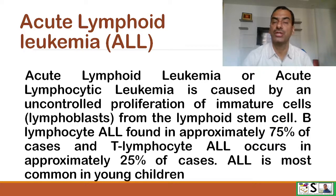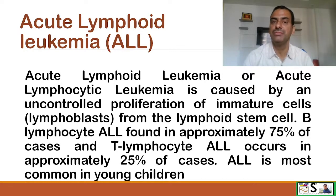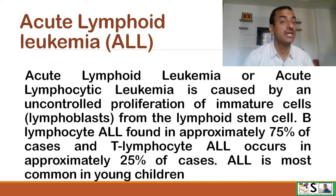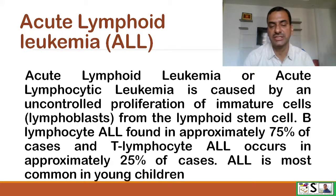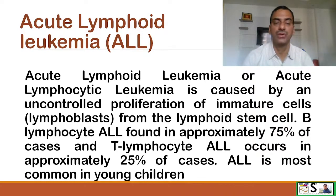Acute lymphoid leukemia, or ALL — also known as acute lymphocytic leukemia — is caused by uncontrolled proliferation of immature cells known as lymphoblasts from the lymphoid stem cells. B-lymphocyte ALL is found in approximately 75% of cases, while T-lymphocyte ALL occurs in only 25%.